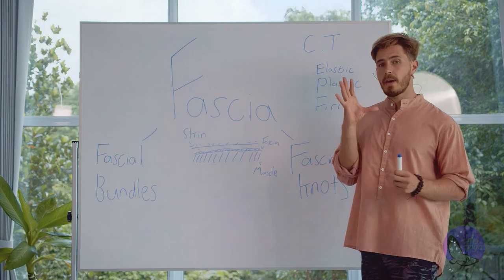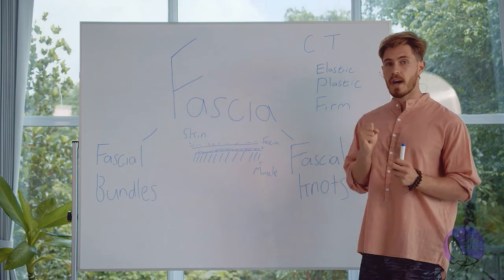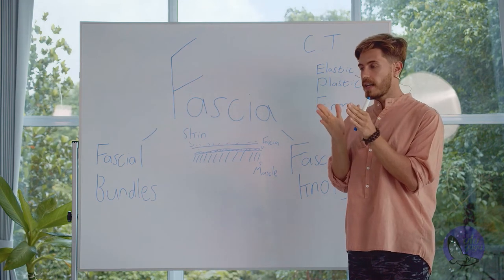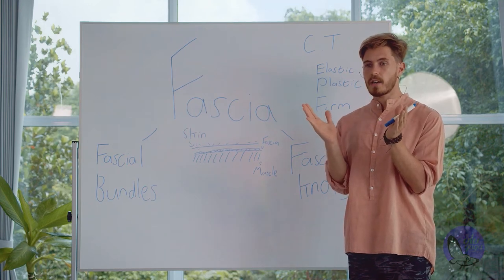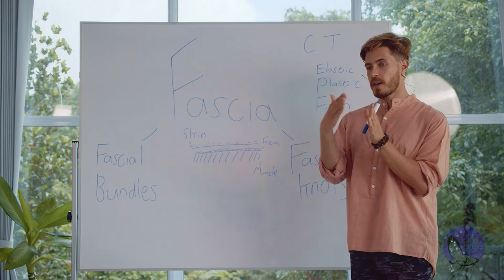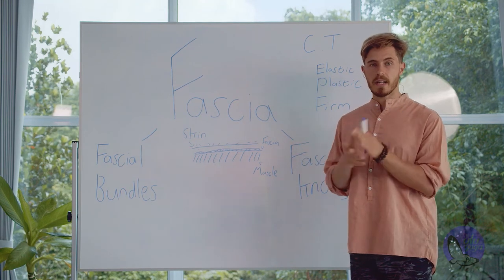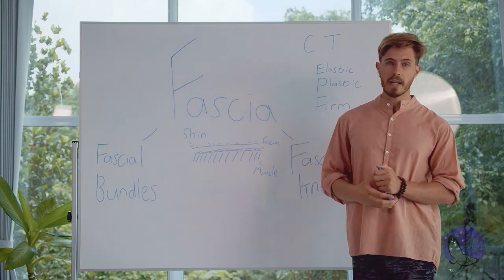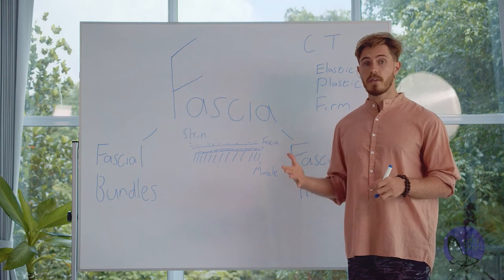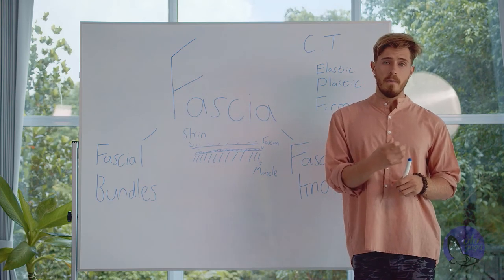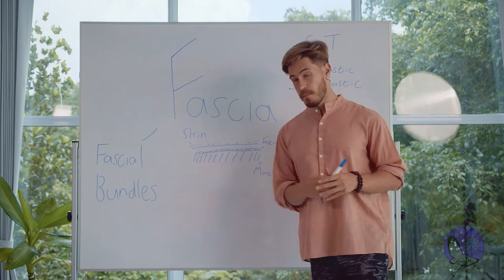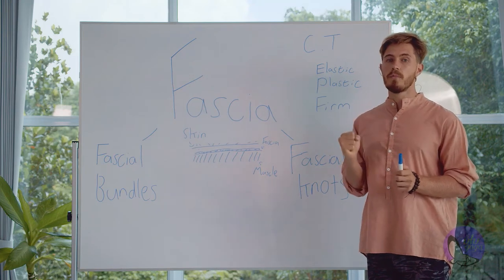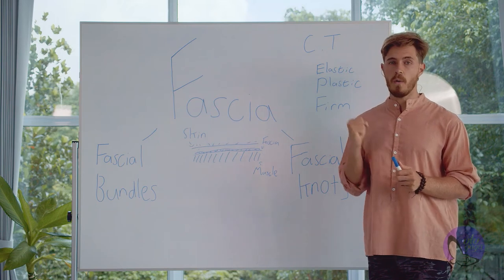Fascial knots occur when there is a dry piece of fascia so dry that it has created a knot in the body. Imagine a sewer system or a river getting clogged — wherever the clog has happened, after that it is dry, receives no water, and there is no more life or movement. The same applies in the body. A knot makes it more difficult to move, and it can eventually turn into a bundle — when there are so many knots that it becomes a bundle and actually constrains your range of motion.